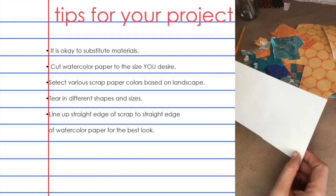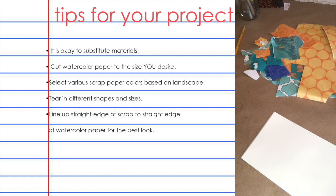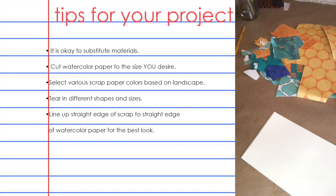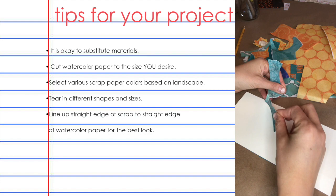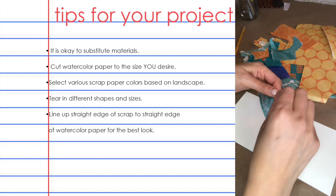Here are some tips and tricks about how to tear your paper. Think about the kind of landscape you want to create — I'm going to be creating a sunrise, so I'm going to be using orange and blue paper. When tearing, make sure that you tear in different shapes and sizes, and always tear toward you.